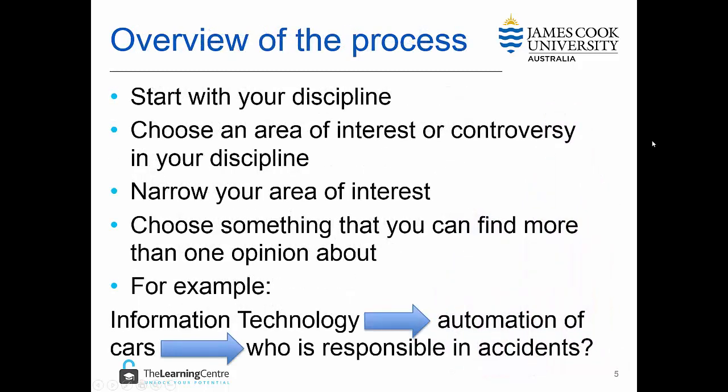The process of developing a research question looks something like this. First, you need to start with your discipline, and then you need to choose an area within your discipline that you're interested in or where there might be a controversy. When you've chosen this area, you need to narrow it down further and choose something where you can find more than one opinion or some disagreement.